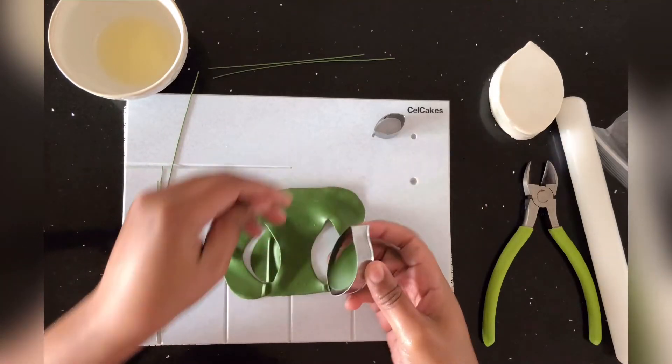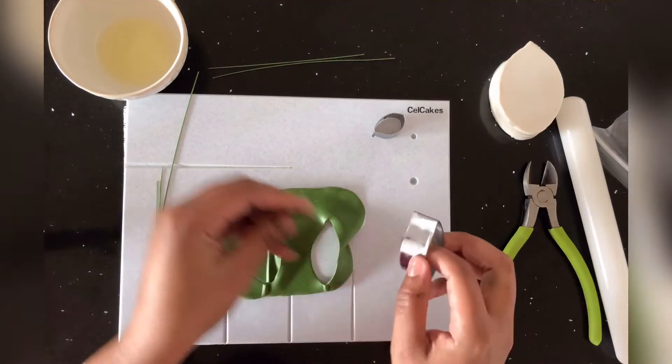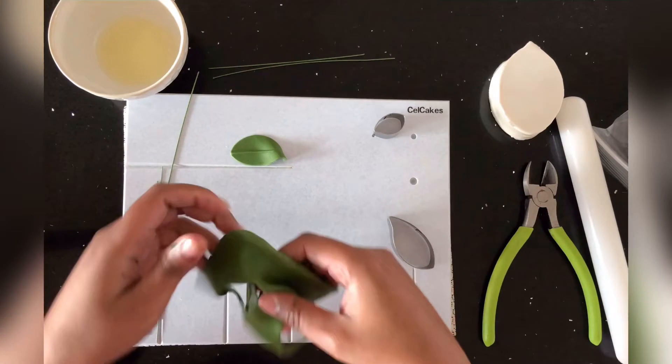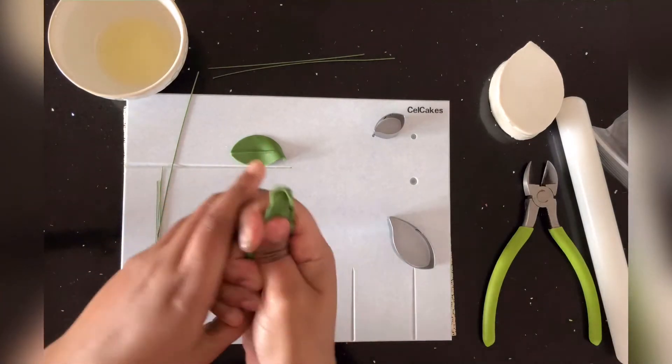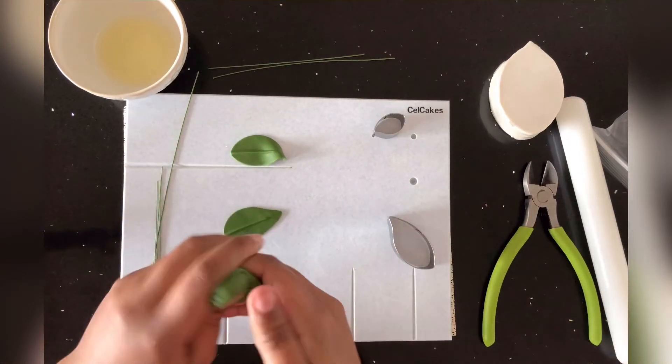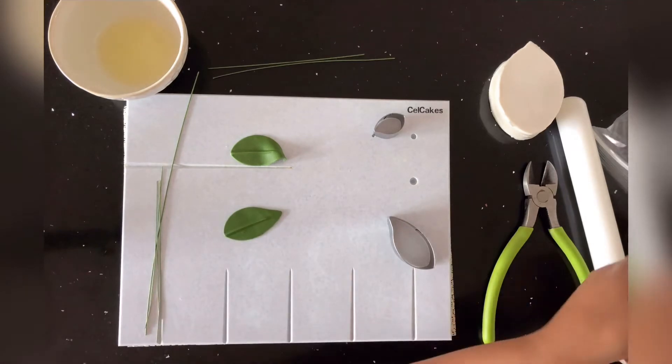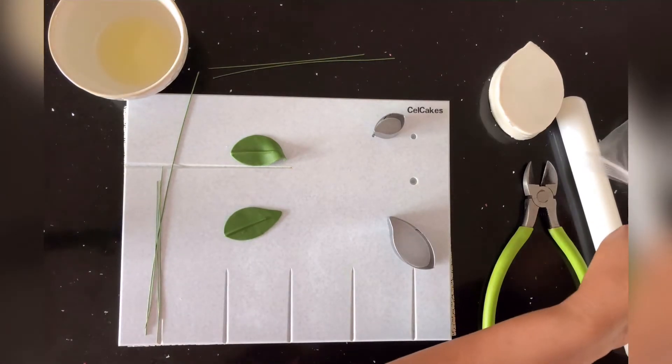Now carefully remove your freshly cut leaves out of the gum paste. And be sure to take your excess gum paste, add a little bit of shortening to it, and then roll it back up into a ball and then place it into your Ziploc bag.